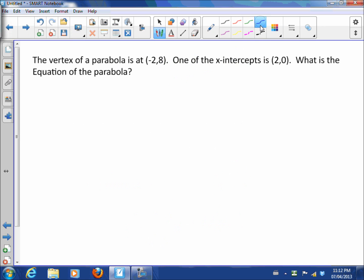We're going to say we have a vertex, and it says one of the x-intercepts is this. So it gives us another point. What's the equation? So the vertex tells us right away, this is 2 to the left and this is 8 up.